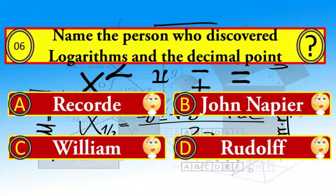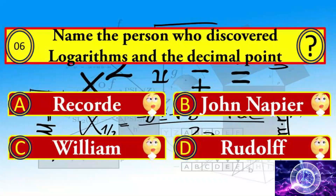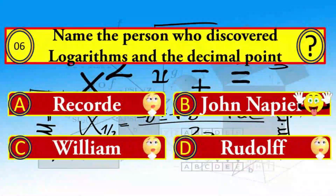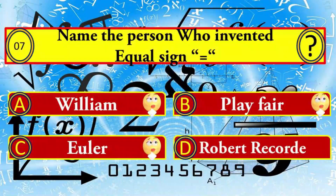Question number six: name the person who discovered logarithms and the decimal point. Your options: A) Record, B) John Napier, C) William, and D) Rodolph. John Napier is the right answer.